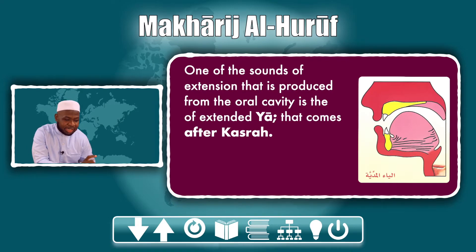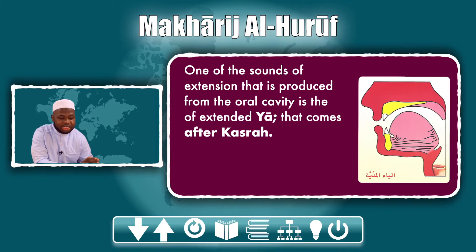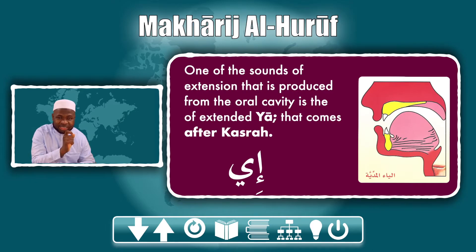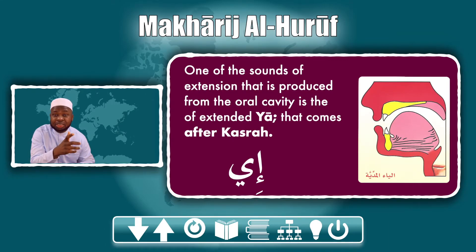The second sound produced from the oral cavity is the extended 'e' — the extended ya that comes after a kasra. This can only come after kasra; it doesn't come after fatha or dhamma, otherwise it becomes sukun and not mad. The sound is: e, e, e. Even if the letter is a heavy letter, we don't change the sound — we don't add a waw to it.